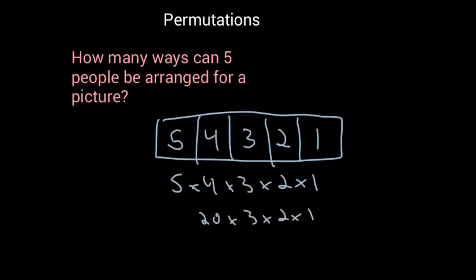Twenty times three is sixty times two times one. Sixty times two is 120 times one, which would still be 120. So it's 120 ways that five people could be arranged for a picture.